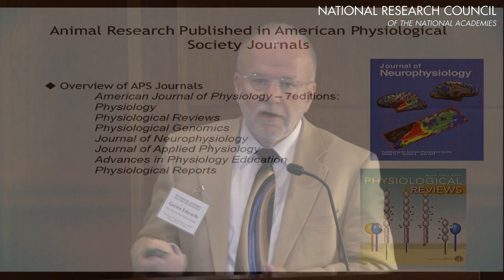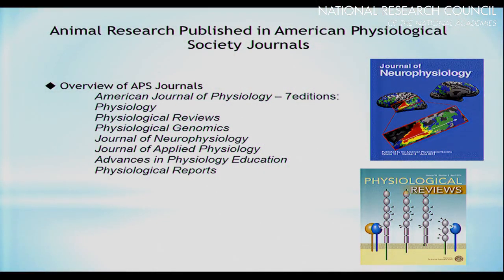The American Physiological Society, or APS, publishes 14 different journals, all of which cover some aspect of animal research. We have the American Journal of Physiology in seven editions, ranging from endocrinology to cell, cardiovascular, and comparative. There's also Physiology, Physiological Reviews, Physiological Genomics, Journal of Neurophysiology, Journal of Applied Physiology, Advances in Physiology Education, and a newer online-only journal, Physiological Reports — a total of 14 journals covering all aspects of animal research.